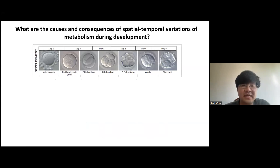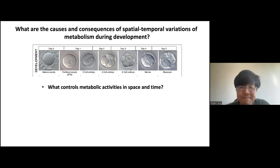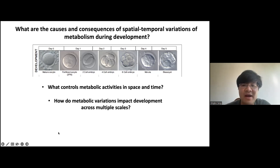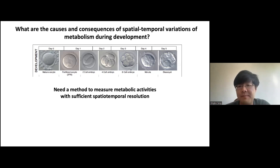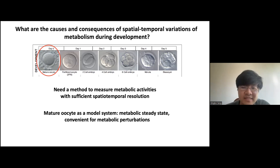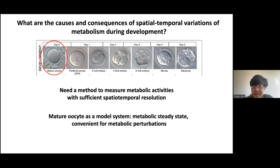The question I'm very interested in is: what are the causes and consequences of those spatial-temporal variations of metabolism during development? For example, what controls metabolic activities in space and time, and how do those metabolic variations impact development across multiple scales? To address these questions, we need a method to measure metabolic activities with sufficient spatial-temporal resolution — techniques like this are generally lacking. I chose the mature oocyte as a model system because at this stage the oocyte exists in a metabolic steady state, meaning its metabolic activities are constant in time over many hours, making it very convenient for metabolic perturbations.